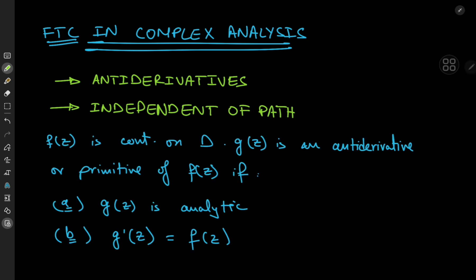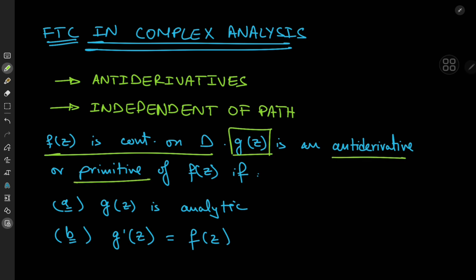Here's the breakdown for antiderivatives. If you're given a function f that's continuous on some domain d, another function g(z) is what we call an antiderivative or primitive of f if g(z) is itself analytic and its derivative equals f. Note, however, that any function of the form g(z) plus some fixed complex number a is also an antiderivative of f, because it satisfies these two criteria.